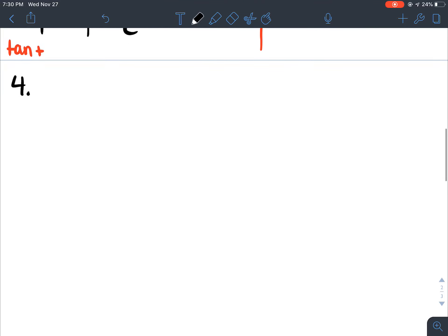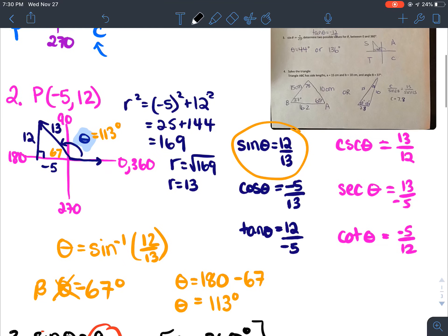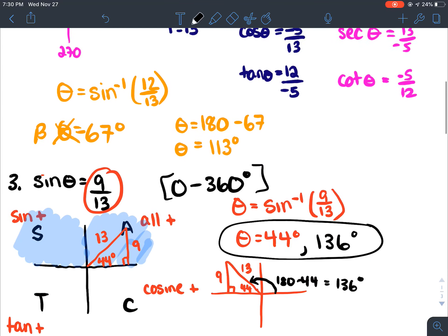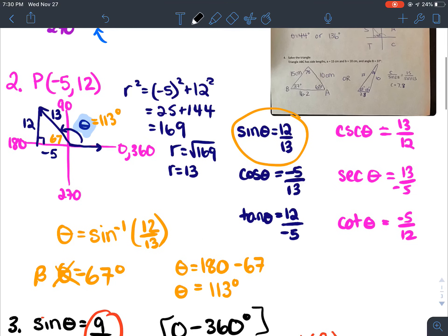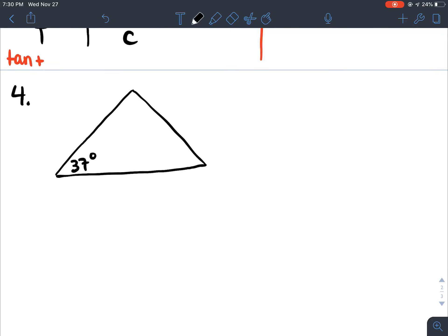Question four is a sine law question. Just gotta look at it. Okay, so most of you draw it like this, where you have 37 degrees. Sorry, I just gotta look at it one more time. Okay, I'm gonna have to go. I hear crying kid. Okay, to be continued.